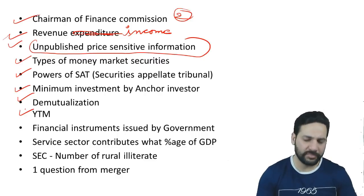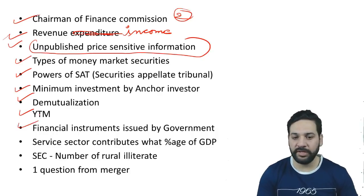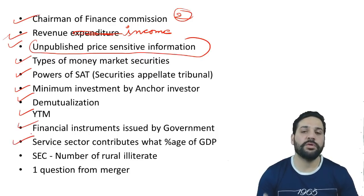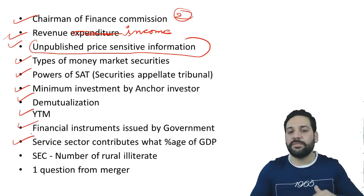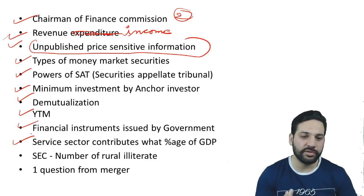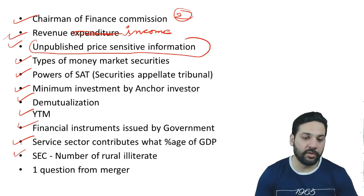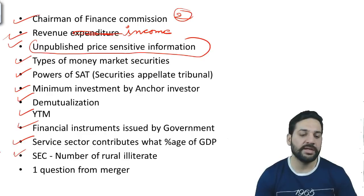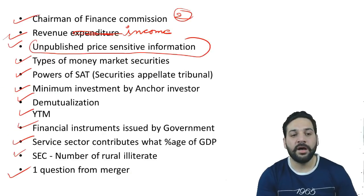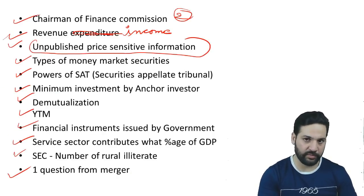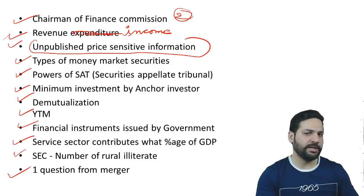Demutualization was there, and there was a simple definition of YTM — that's a finance topic but it appeared in Security Market. The financial instrument issued by government was there. Surprisingly, there was a question on what percentage of GDP is contributed by the service sector — the answer is more than 50 percent. A question on the number of rural illiterates was also a surprise, as it was somewhat out of syllabus. Once we get more questions, I'll share a memory-based paper on bankexamstoday.com.